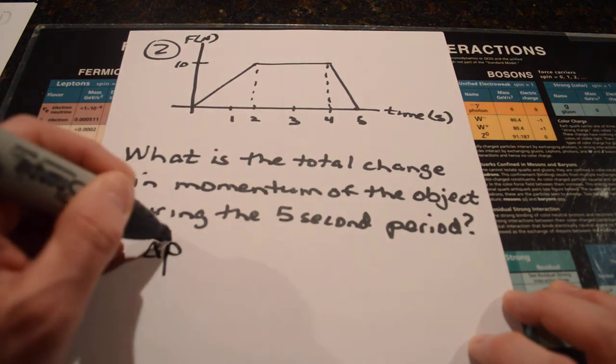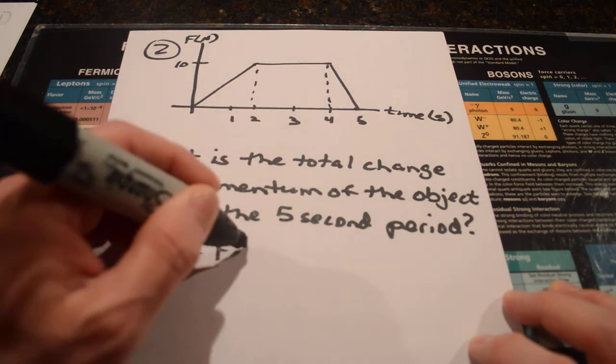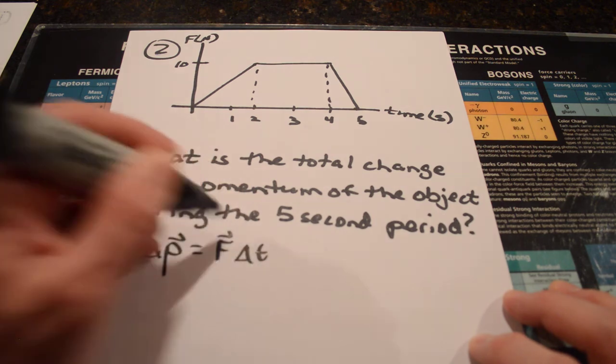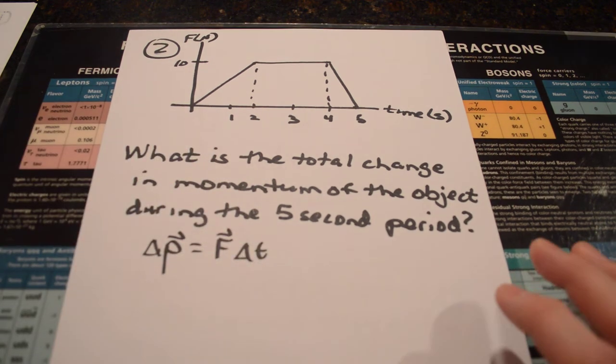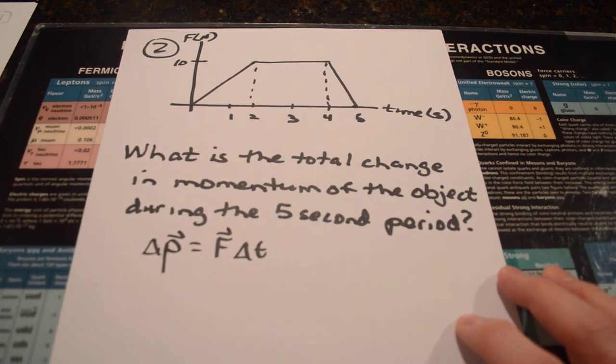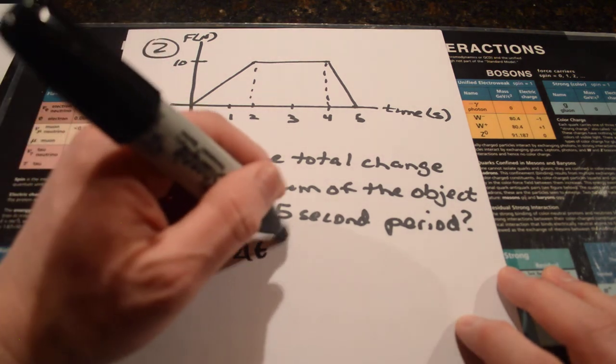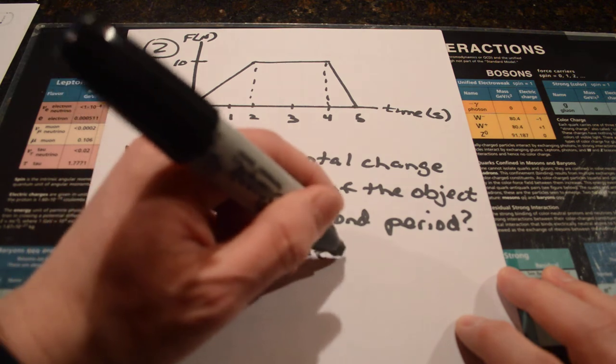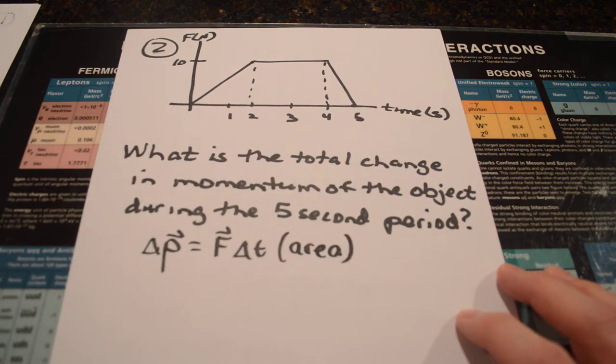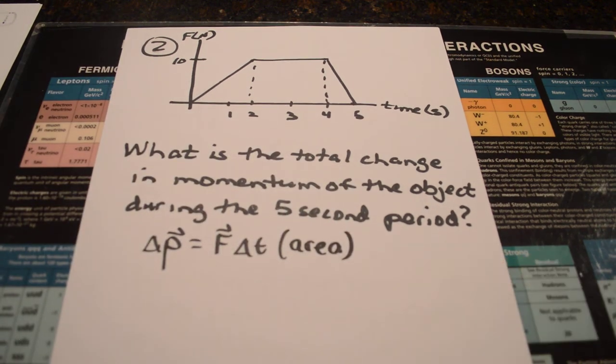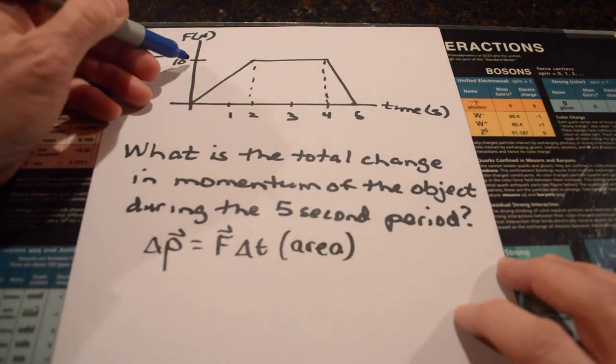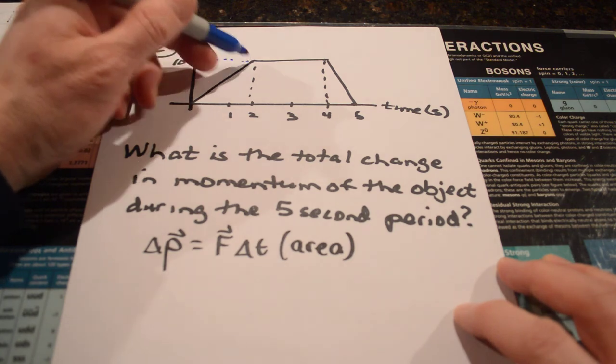The change in momentum, we said, was equal to the impulse, the force times the change in time. So, if you remember from our graphical analysis part of the class, the change in momentum will just be equal to the area under the curve for this. So, what you need to do is find the areas of the separate pieces. And it says, for the whole five seconds, well, notice that the force at between zero and two is constantly increasing up to two seconds.